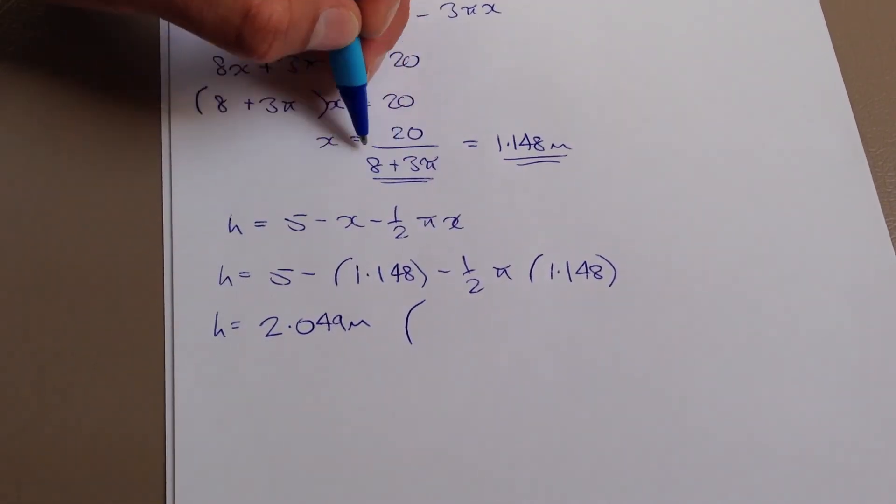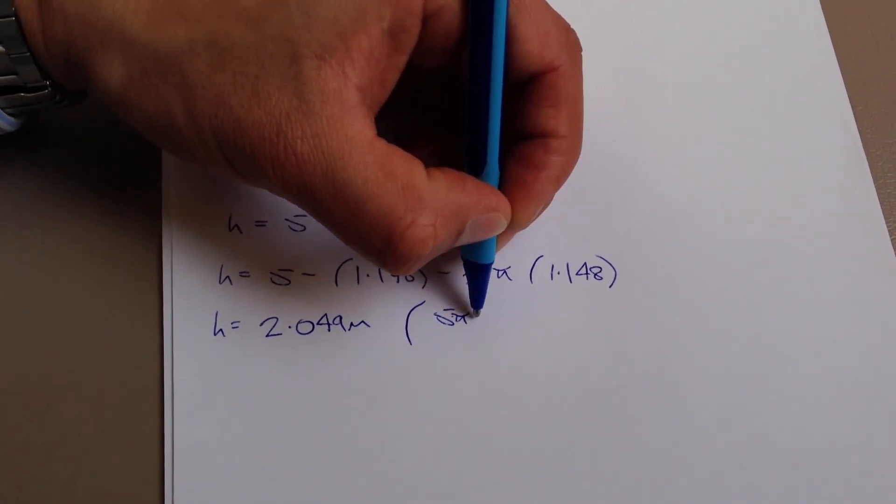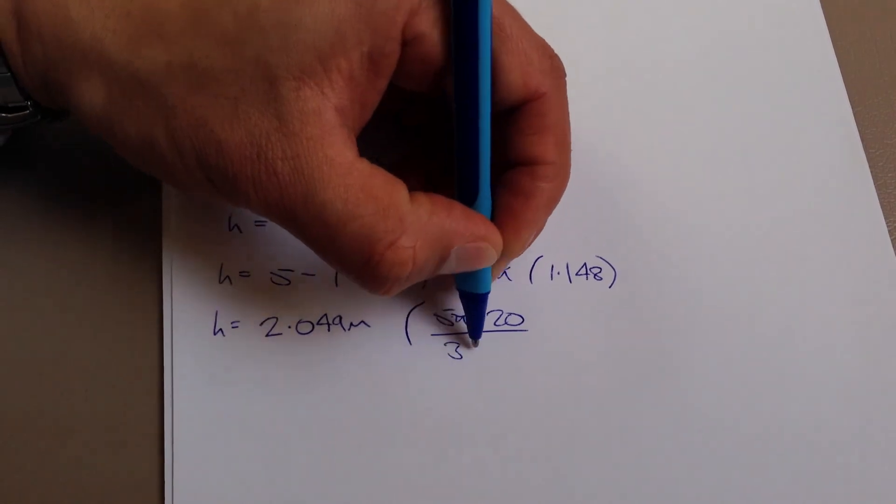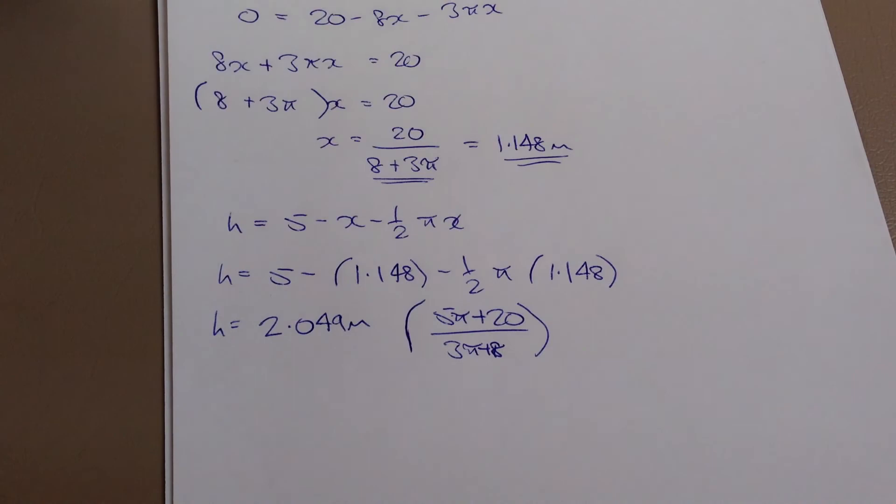Or, if you did choose to use this version, it will come out to be roughly 5... Well, not roughly exactly, I guess, in this case. 5 pi plus 20 over 3 pi plus 8. And, of course, that's meters. So, then we just make our final statement. Therefore,